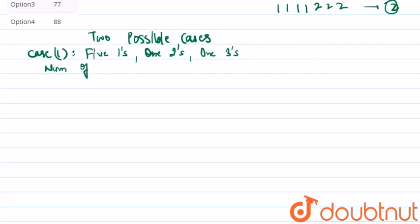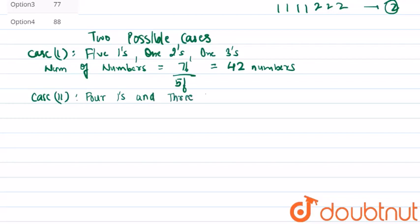7! / 5! which is, as there are repeated digits, there are 42 numbers. And in case 2, there are four 1's and three 2's.